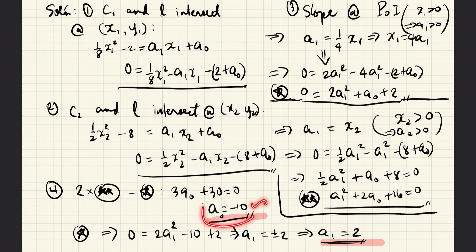Furthermore, we can now replace the a0 here with -10. And by doing that, we obtain this equation here. We can now solve for a1. We see that this is a quadratic equation, and so we get two possible solutions: that is positive 2 and negative 2.